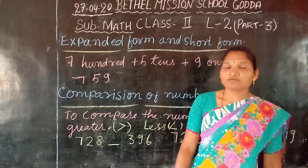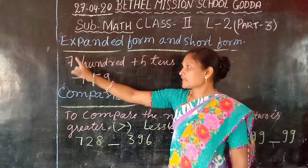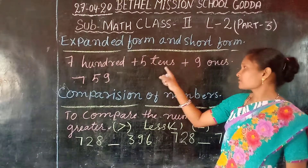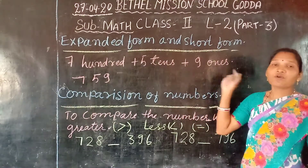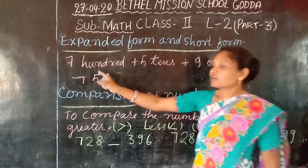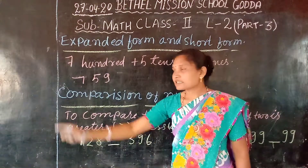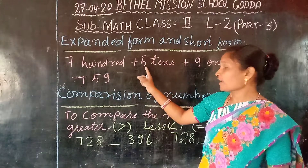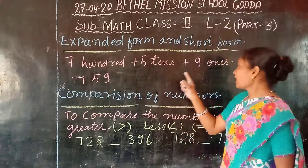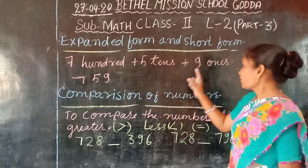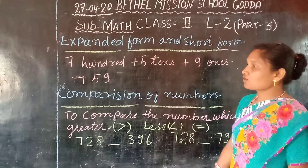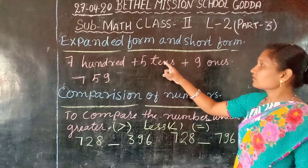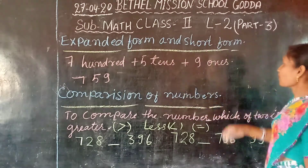In expanded form we write seven hundreds, five tens, nine ones. So how many hundreds are there? Seven hundred. And how many tens? Five tens. And how many ones? Nine ones. So this is how we write the expanded form.